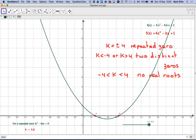So just to finish off then, just to bring this together, if k equals plus or minus 4, we get a repeated zero. If k is less than minus 4 and k is greater than 4, we get two distinct roots. And if k is between minus 4 and 4, we get no real roots. And you can play around with this applet to see this for yourself.